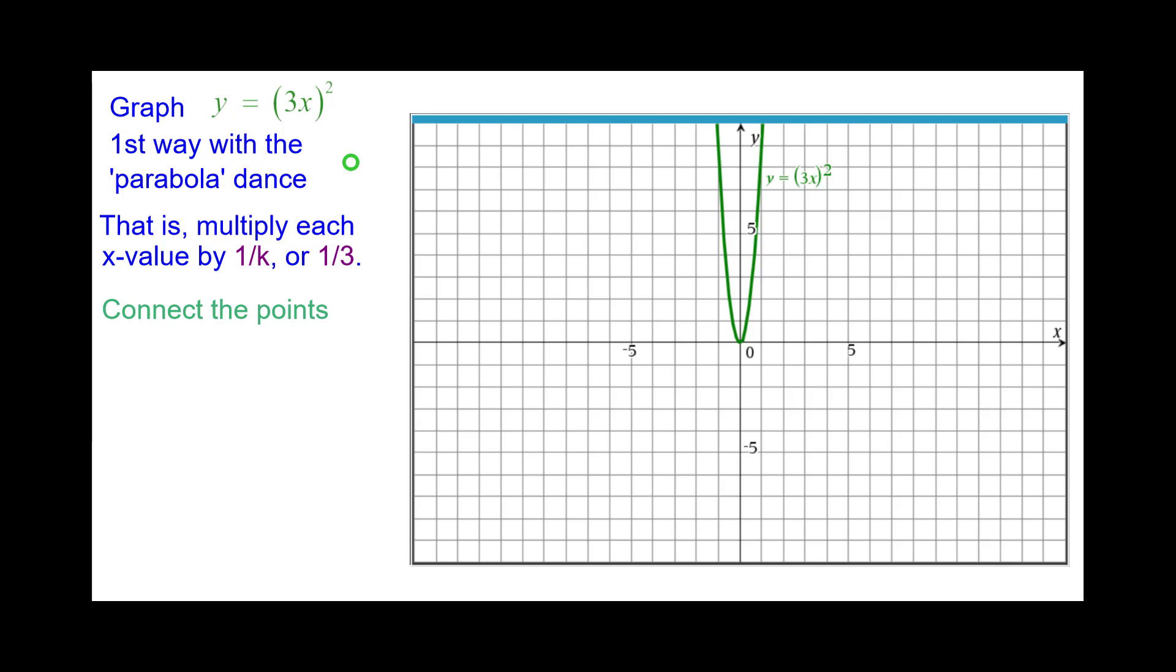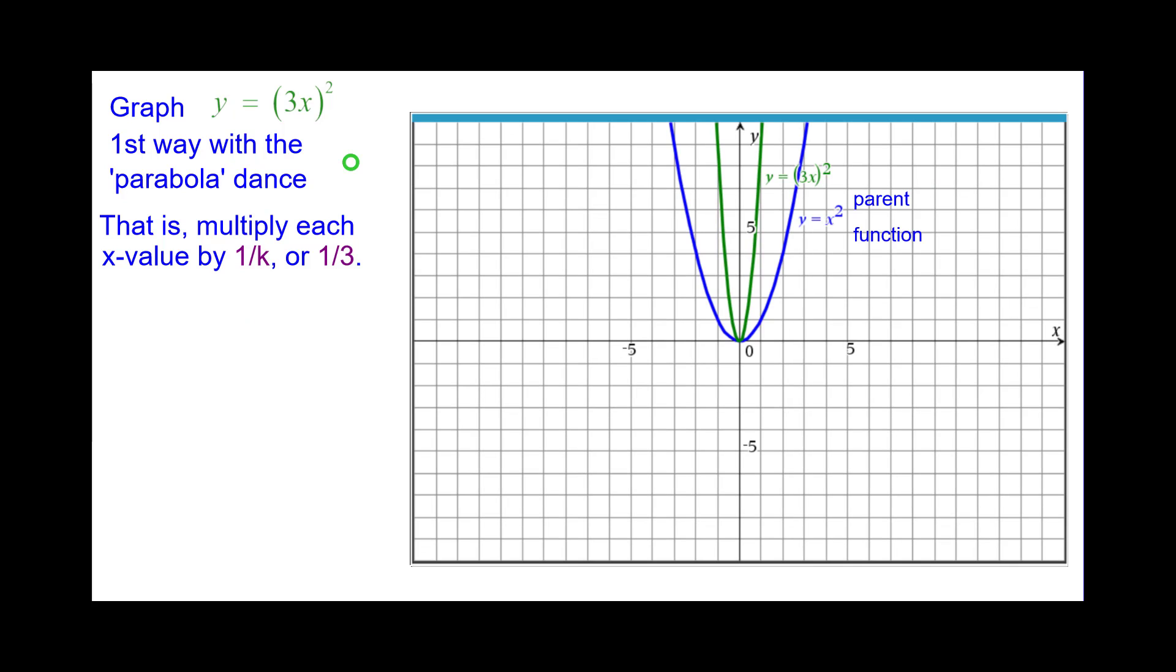Connect the points. This is our graph of y equals the quantity 3x squared. Comparing that to the parent function, we pick two points. On the green it's 1 comma 9. On the blue it's 3 comma 9. You can see the x coordinates - green times 3 is the blue x coordinate while the y coordinates remain identical. So we say there is a horizontal dilation factor of 1 third and this is a horizontal shrink.